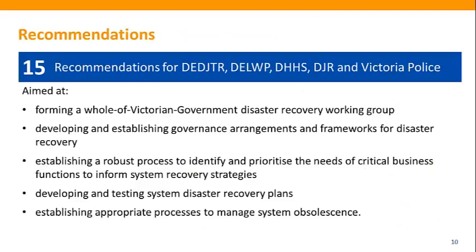We made 15 recommendations aimed at forming a whole-of-Victorian-government disaster recovery working group, developing and establishing governance arrangements and frameworks for disaster recovery, establishing a robust process to identify and prioritise the needs of critical business functions to inform system recovery strategies, developing and testing system disaster recovery plans, and establishing appropriate processes to manage system obsolescence. The audited agencies have provided detailed action plans and have started to address our recommendations.